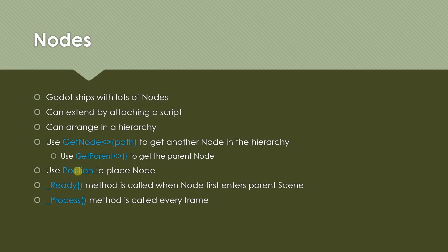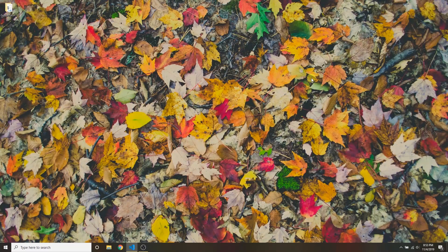Nodes have a position property that determines the position of the node relative to the parent. They also have two important functions: ready, which is executed as soon as the node is added to a scene, and process, which is executed every frame. A game has a main loop that executes a certain number of times every second — typically around 60 or so, but it varies based on how fast your computer is. You do a little bit of logic and then you draw. How many times per second that happens is called your frame rate, and the process method is called every frame.